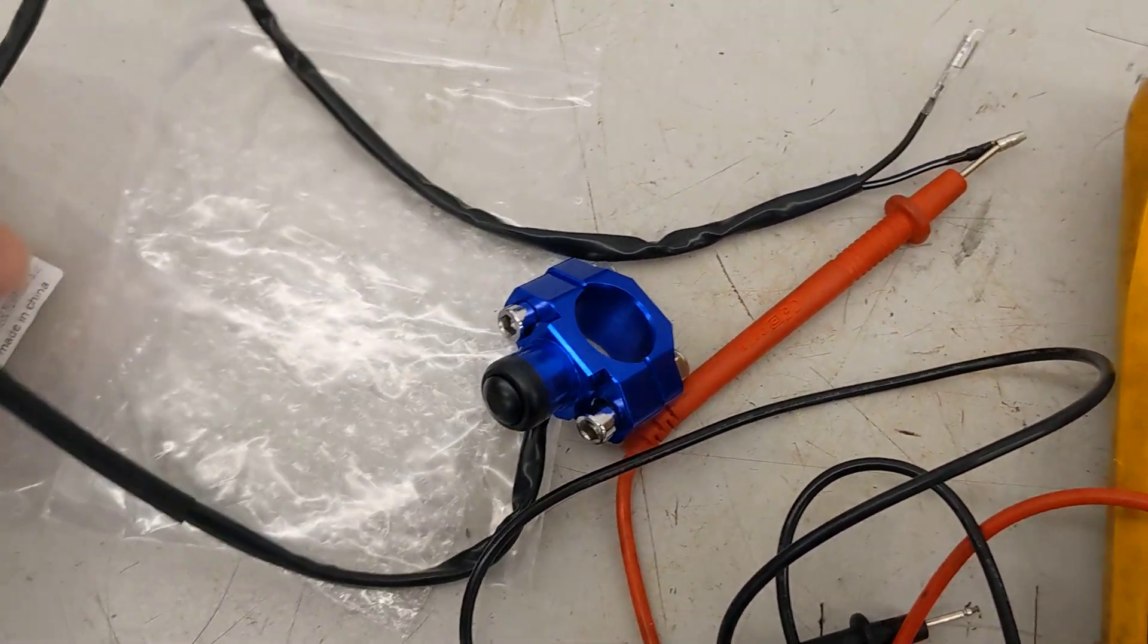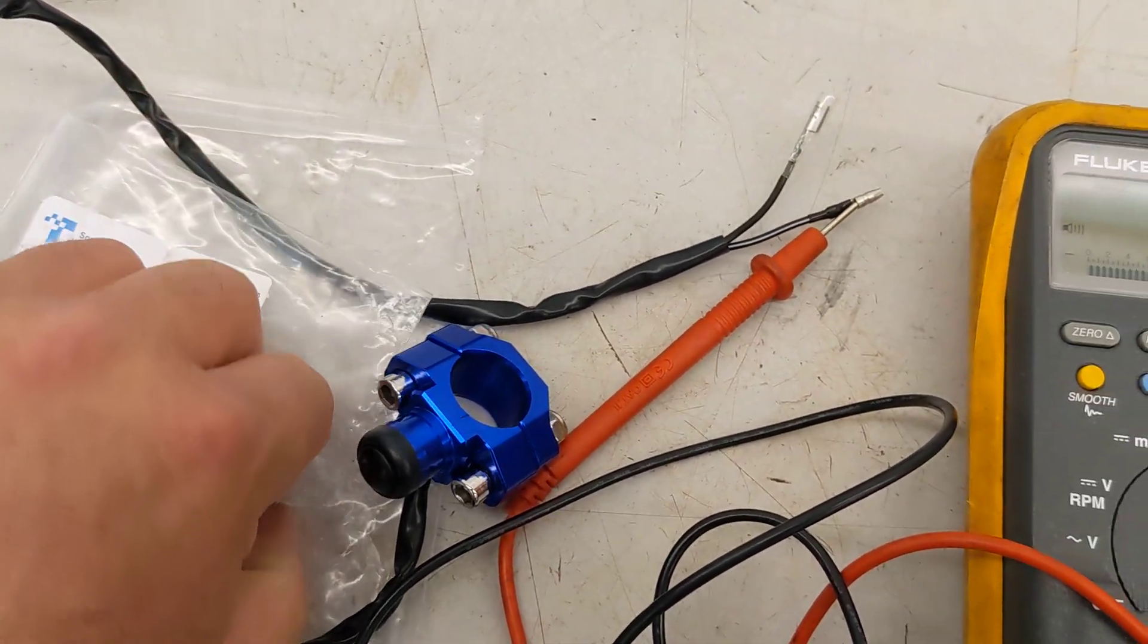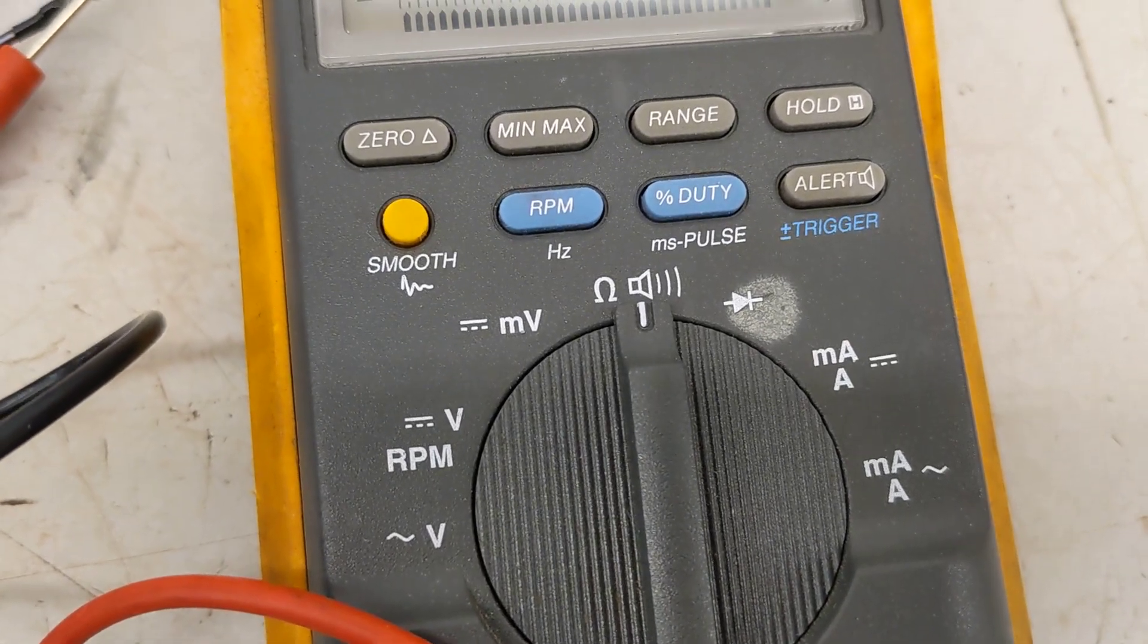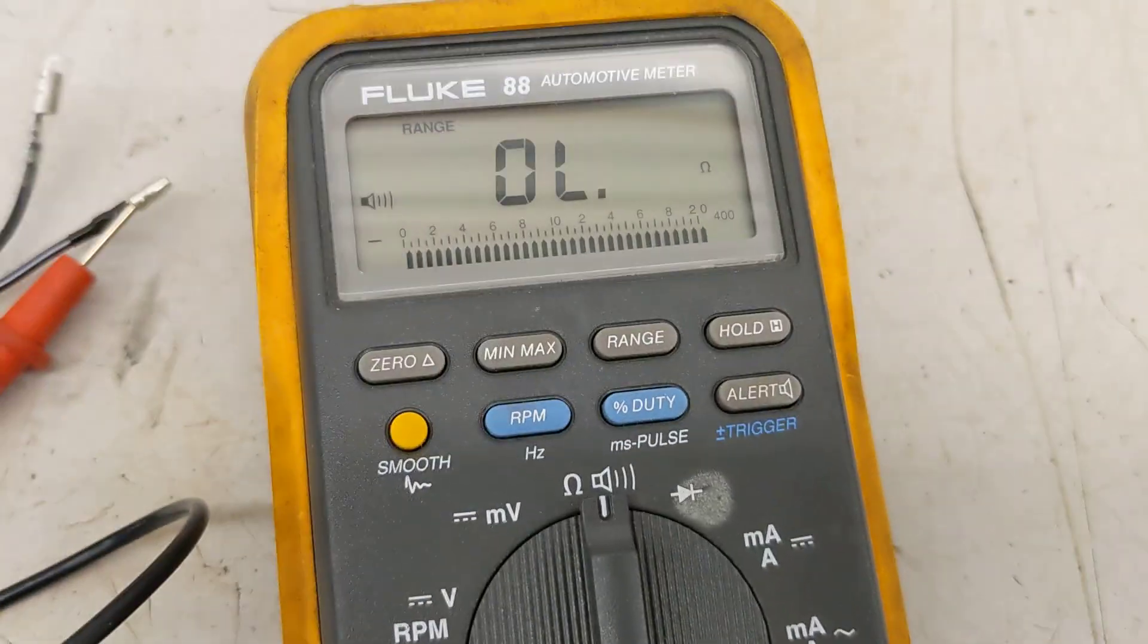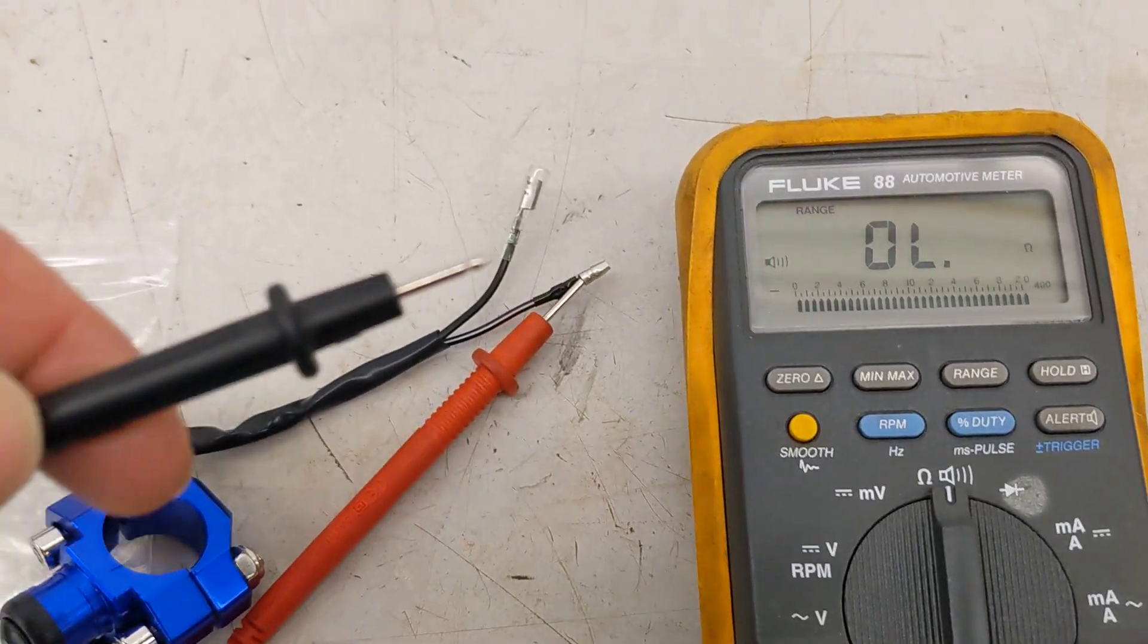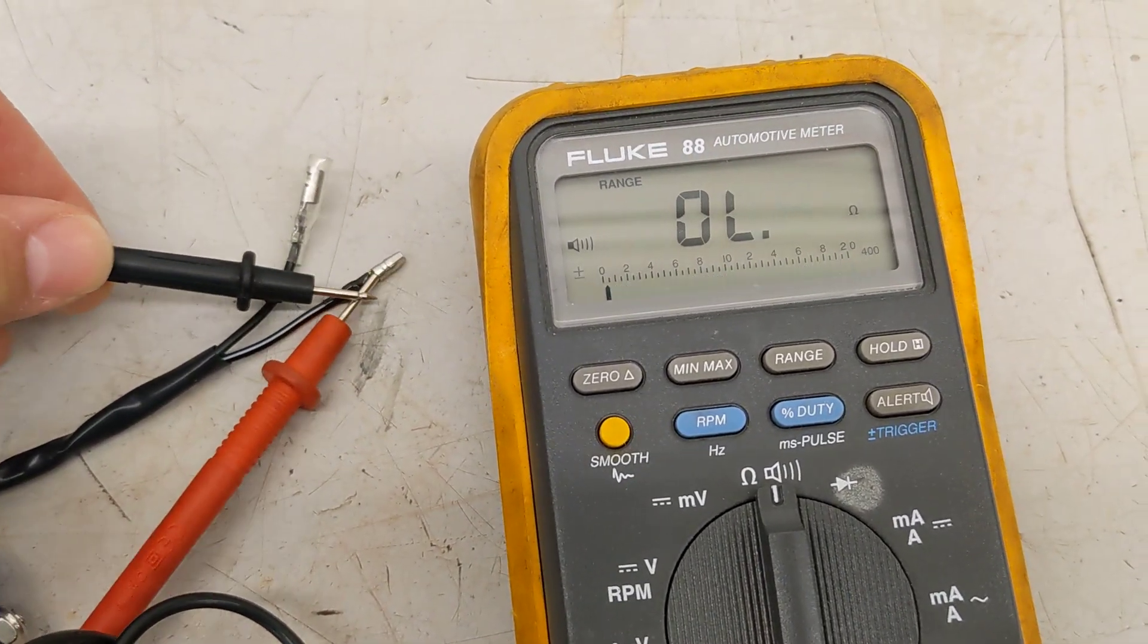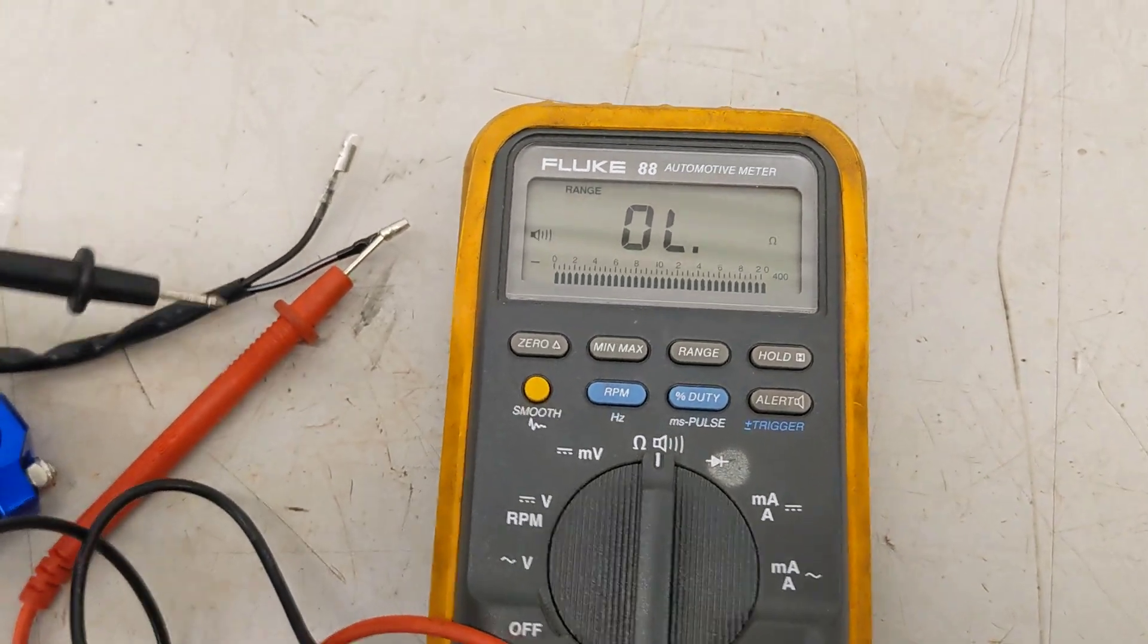So just to test theory of operation and the way that this switch works, I have my Fluke meter set up in ohms and I have the alert turned on. So when these two wires, when these two probes make contact, then the meter beeps.